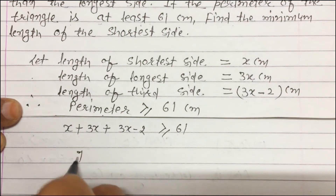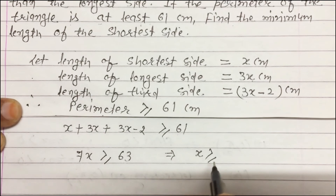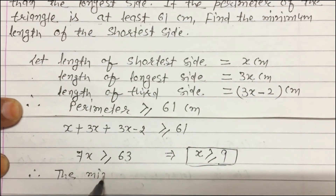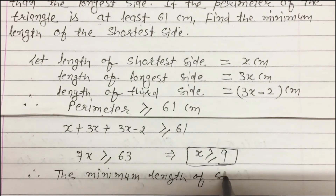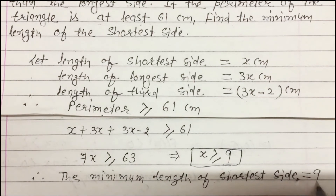Solving, we get 7x ≥ 63, therefore x ≥ 9. Since x is the shortest side, the minimum length of the shortest side is 9 cm.